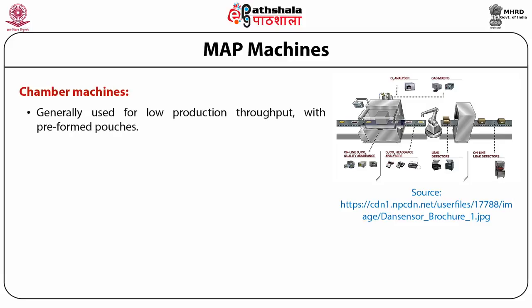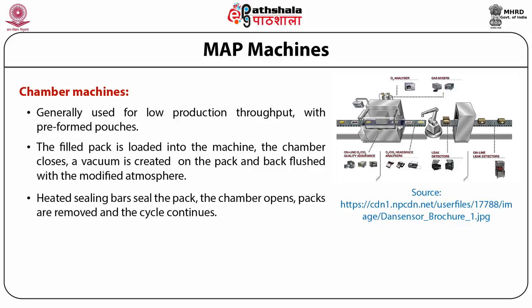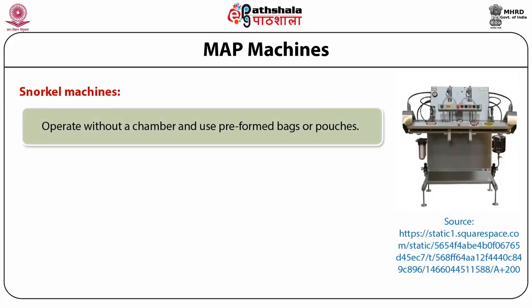Chamber machines are generally used for low production throughput with pre-formed pouches or tray machines. The filled pack is loaded into the machine, the chamber closes, a vacuum is created on the pack, and the bag is flushed with the modified atmosphere. Heated sealing bars seal the pack, the chamber opens, packs are removed, and the cycle continues. These machines are cheap and easy to operate but relatively slow and labor intensive. Some chamber machines can handle large packages and are suitable for bulk packs.